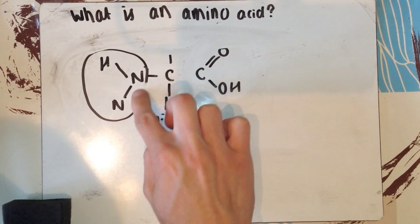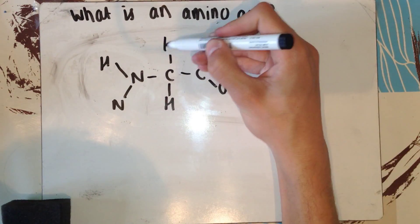The simplest amino acid, glycine, the R group is simply a hydrogen atom.